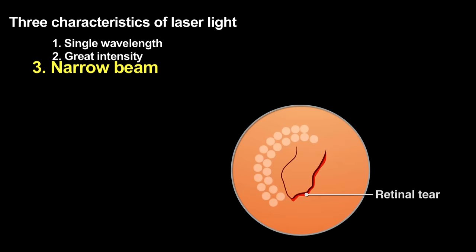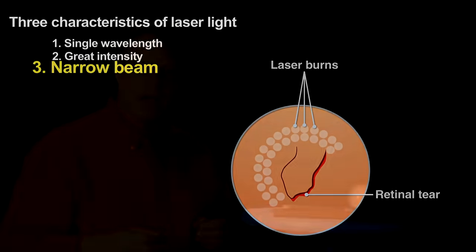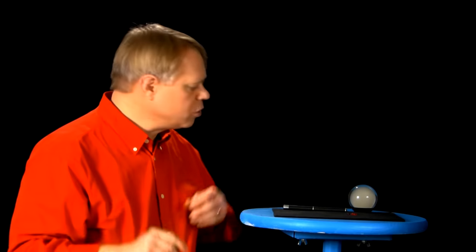The beam's narrowness allows the surgeon to affect only the area of the retina that needs to be repaired, areas as small as 30 microns. How a laser creates light with these three characteristics is a tour de force of engineering. Let me show you.